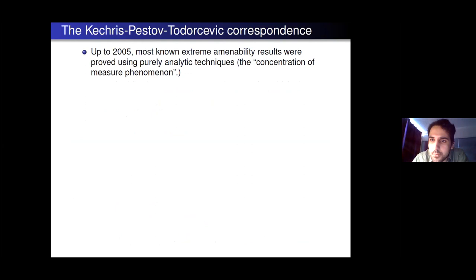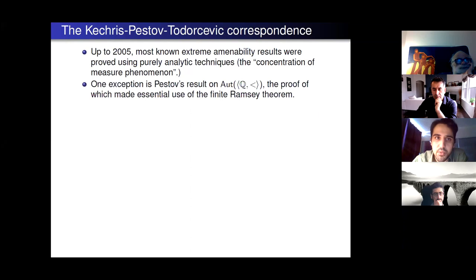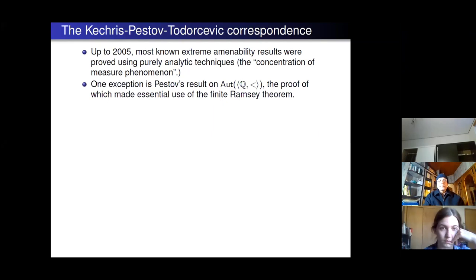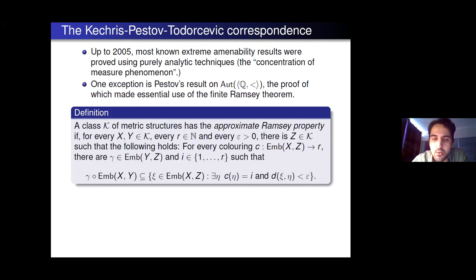If you have one of these nice structures whose automorphism group is sufficiently rich, there's a nice way to show extreme amenability. Before 2005, most of these known results were proved using concentration of measure — a purely analytic phenomenon, no combinatorics at all. The main exception was Pestov's proof that the automorphism group of the rationals with the usual order is extremely amenable, which made essential use of a finite Ramsey theorem. This was then generalized. Working with metric structures, we want a notion of an approximate Ramsey property.